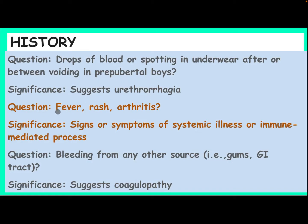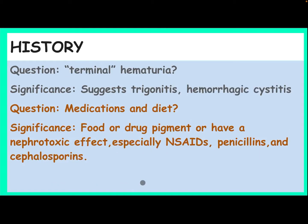Ask about fever, rash, or arthritis — these are significant signs or symptoms of systemic illness or an immune-mediated process. Ask about bleeding from any other source, like gums or GI tract, which is significant as it suggests coagulopathy. Ask about terminal hematuria, which may suggest trigonitis or hemorrhagic cystitis.